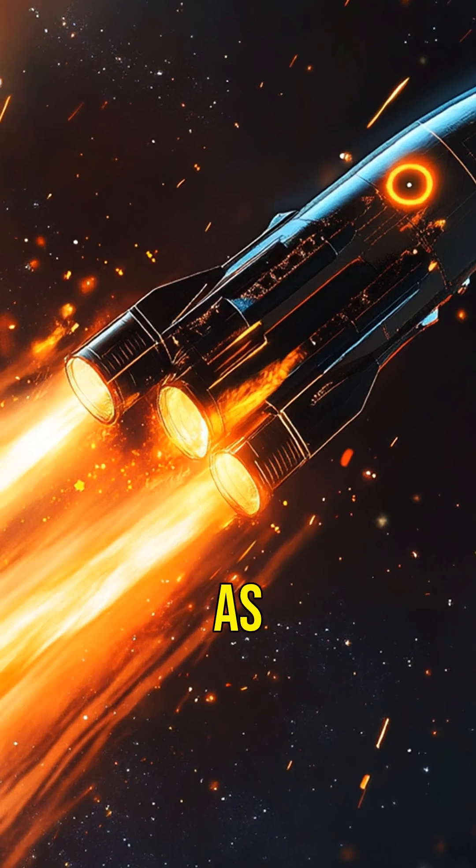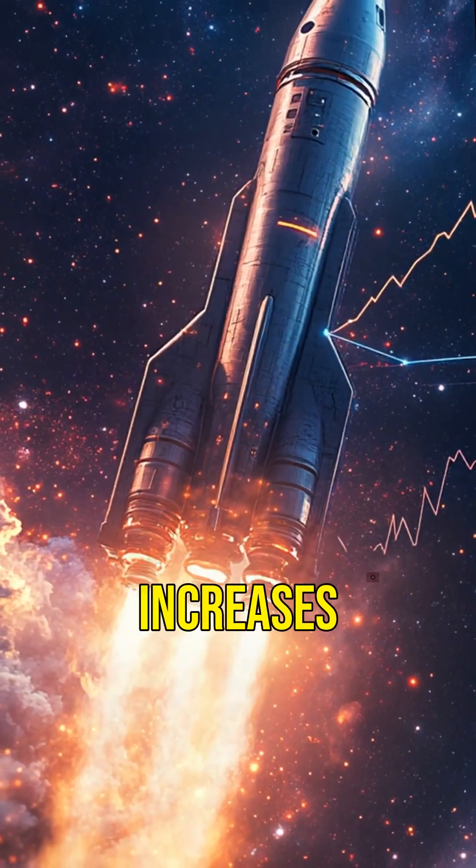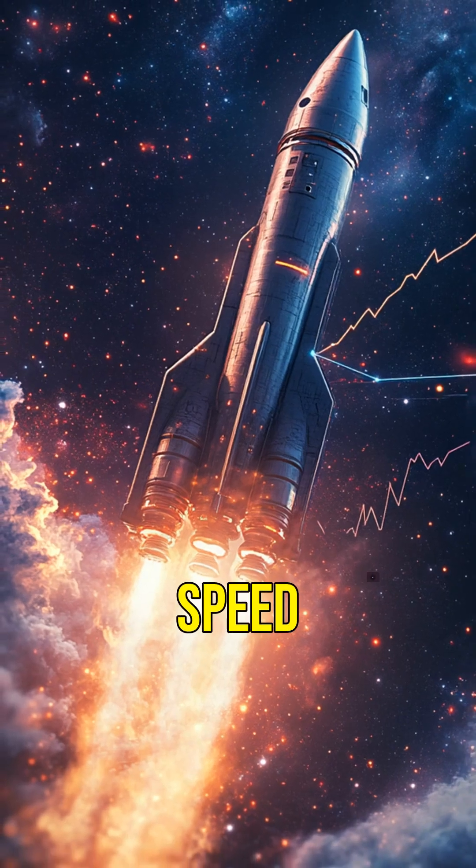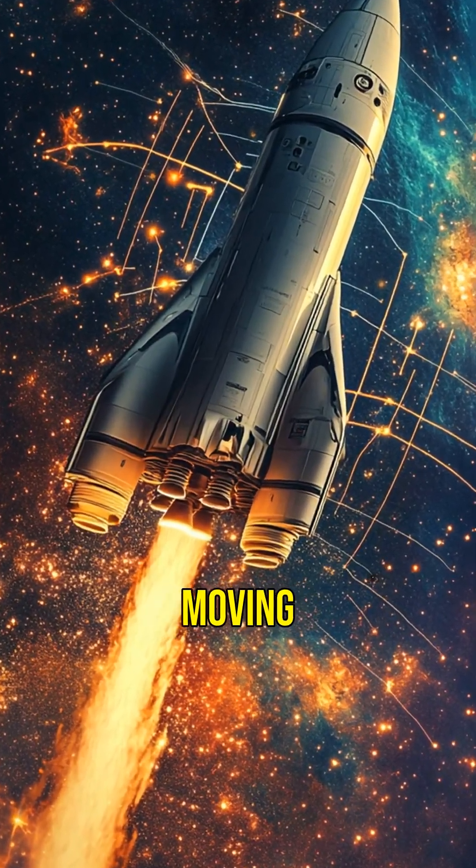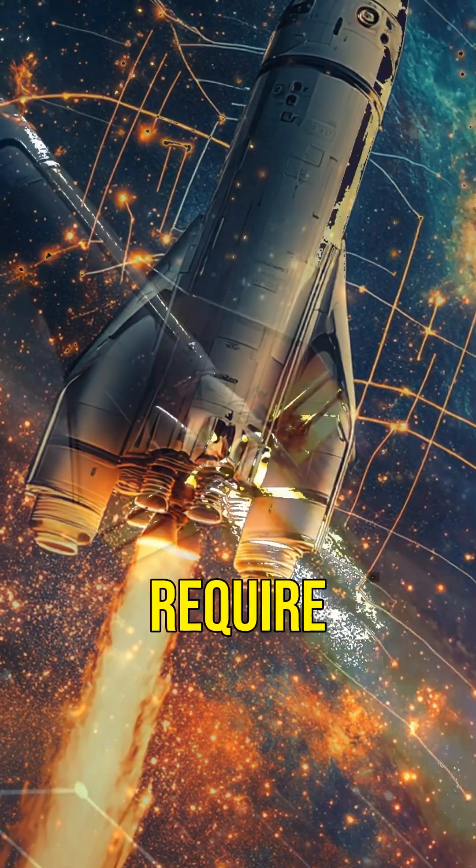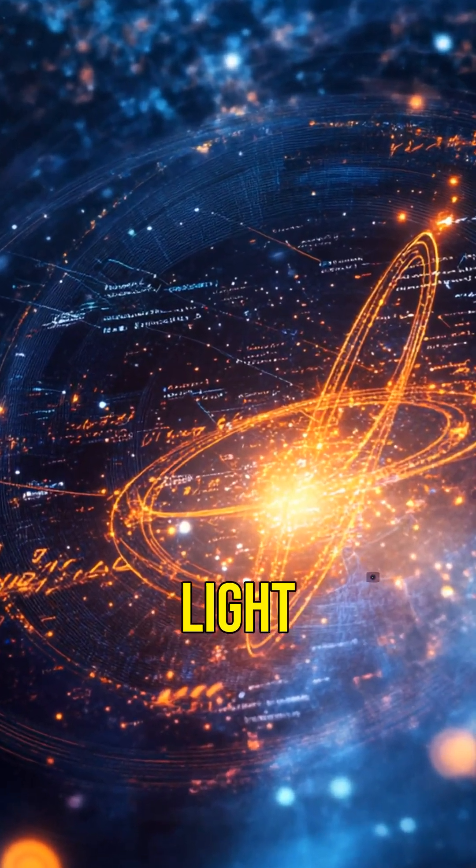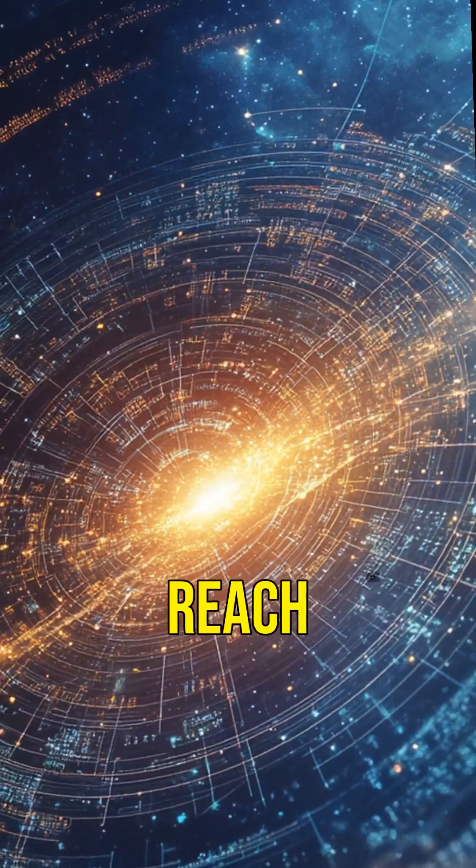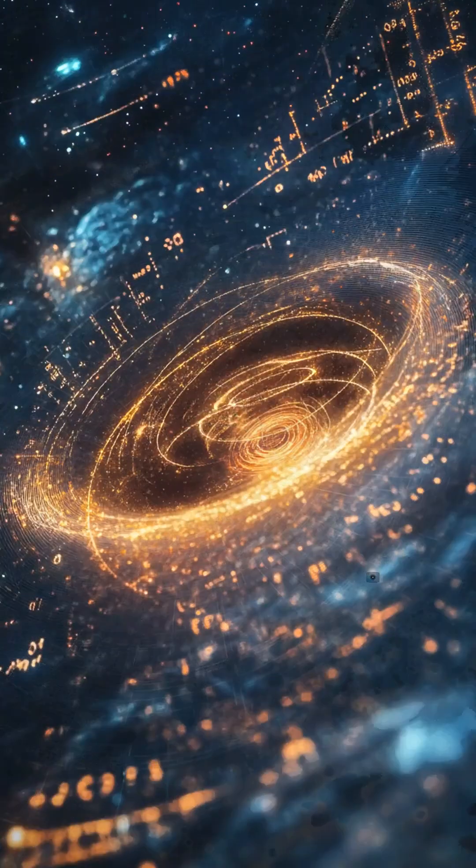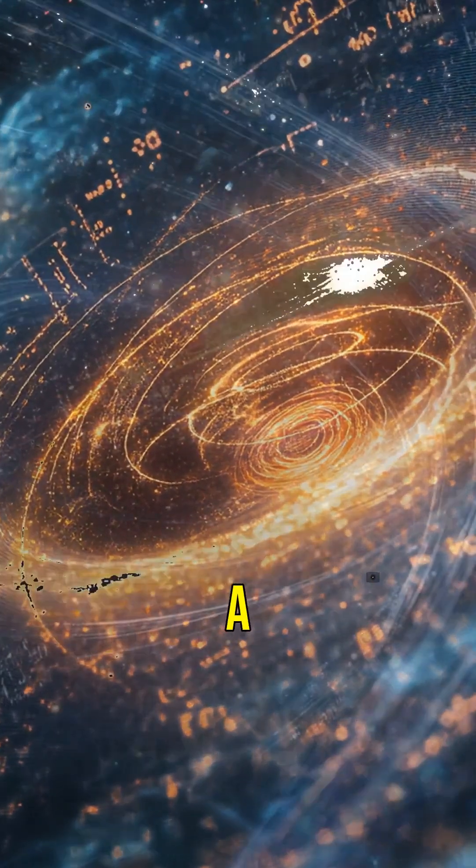As objects move faster, their mass increases. At light speed, mass becomes infinite. Moving something infinitely massive would require infinite energy - something the universe doesn't have to give. Photons, or particles of light, have no mass, allowing them to reach this incredible speed. For anything with mass, however, light speed is like a brick wall, a boundary that cannot be crossed.